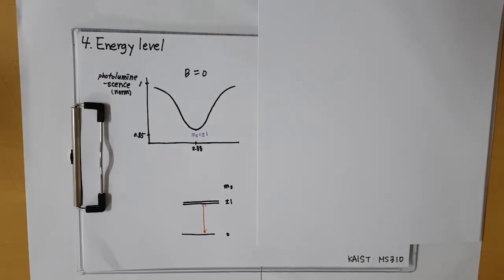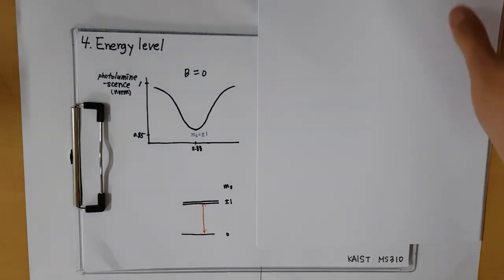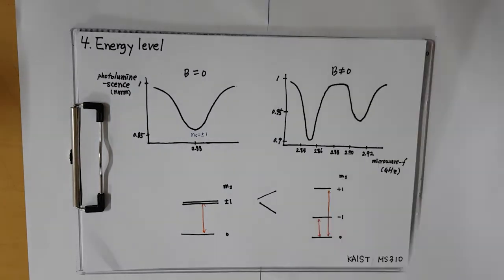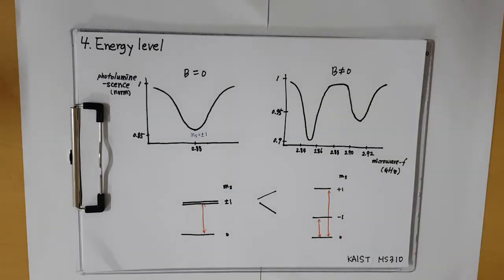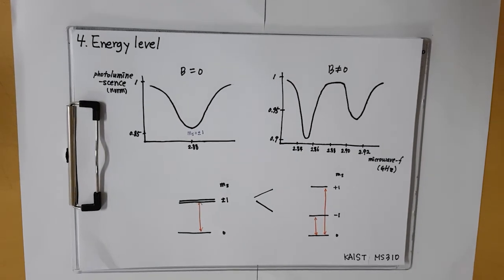If we eradicate the magnetic field, how does the graph change? As we mentioned before, magnetic field splits the ms1 and ms-1 states in ground and excited states.